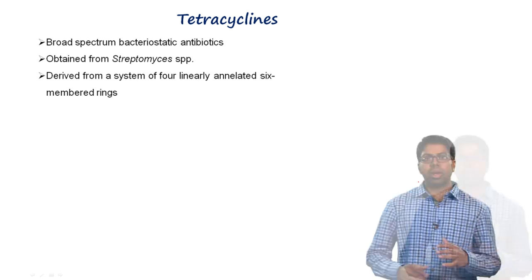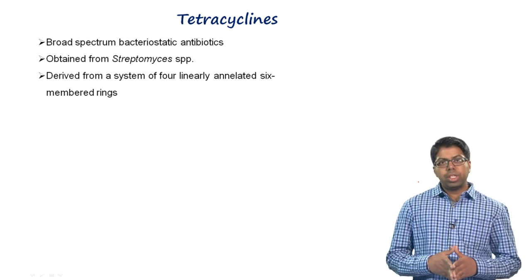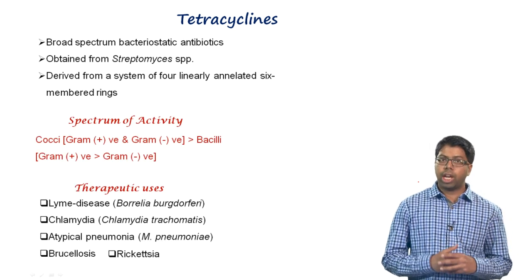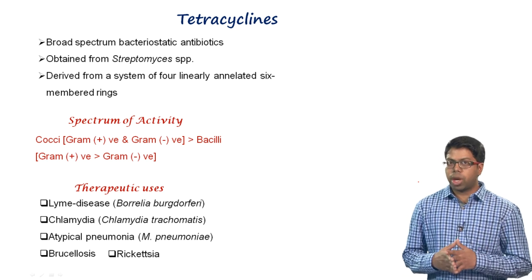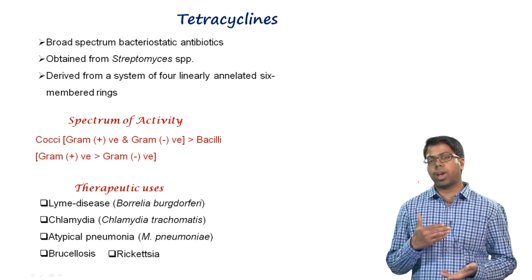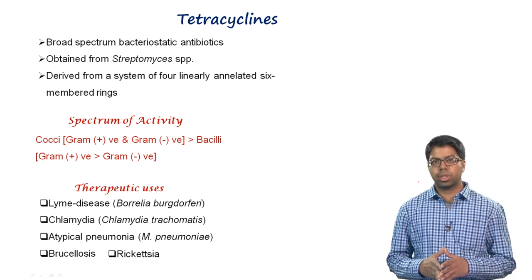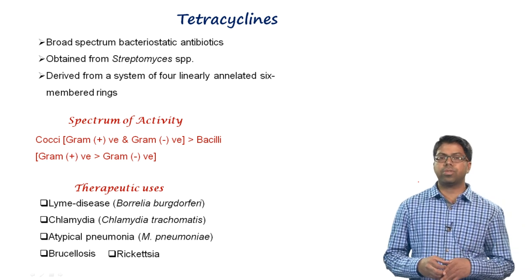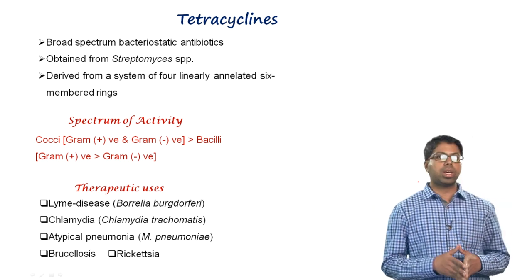Tetracyclines are broad-spectrum bacteriostatic antibiotics obtained from Streptomyces species and are the second most widely prescribed antibiotic after penicillins. They are highly effective against aerobic gram-positive and gram-negative organisms but have limited activity against anaerobes. They are effective against Borrelia burgdorferi (causing Lyme disease with fever, rash, and joint pain), Chlamydia trachomatis (a sexually transmitted disease), Mycoplasma pneumoniae (causing atypical pneumonia), and Brucella and Rickettsia species.